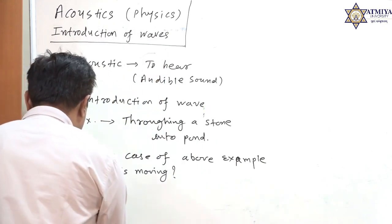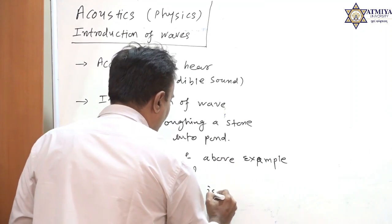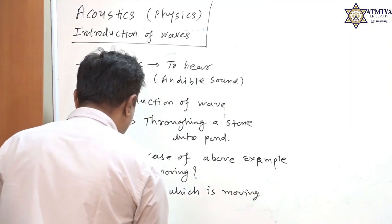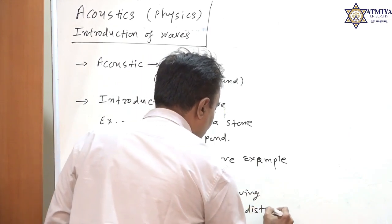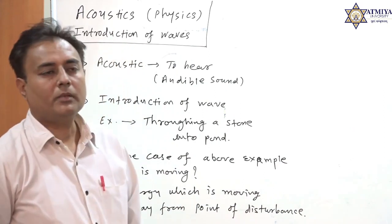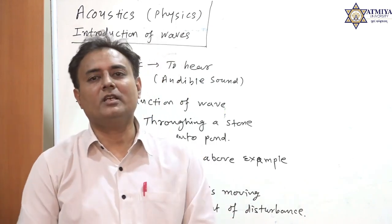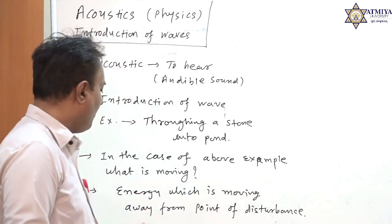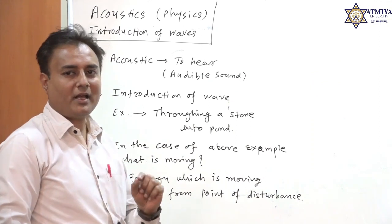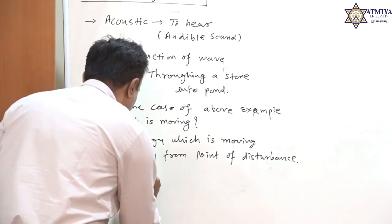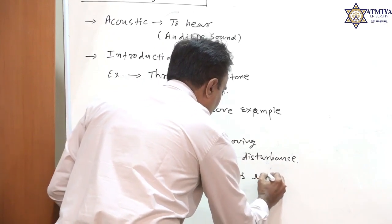Essentially, it is energy which is moving away from the point of disturbance. That is what we see physically — energy moving in the form of a wave. But from where does this energy come? That energy is coming from the kinetic energy of the stone which we have thrown into the pond. That particular stone has certain kinetic energy, and the kinetic energy of the stone converts into wave energy.